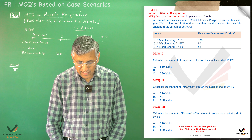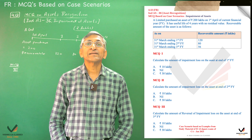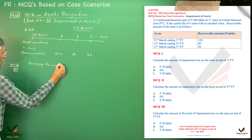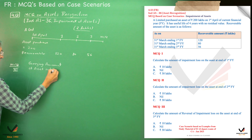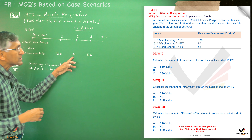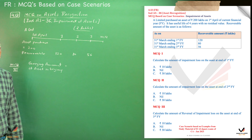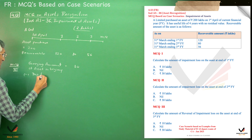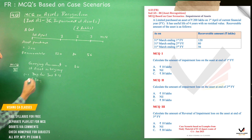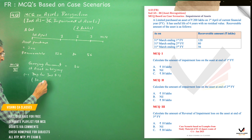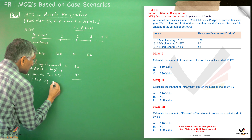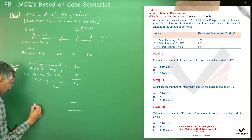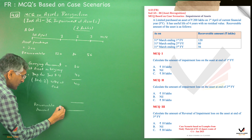The third MCQ asks: calculate the amount of reversal of impairment loss, if any, at the end of the third financial year. First, let us find the carrying amount at the beginning of year 3. The WDV at the end of year 2 was Rs. 80 lakhs. In year 3, with 2 years remaining, depreciation = Rs. 80 divided by 2 = Rs. 40 lakhs. So the carrying amount at end of year 3 = Rs. 80 minus Rs. 40 = Rs. 40 lakhs.